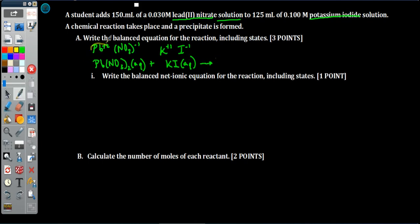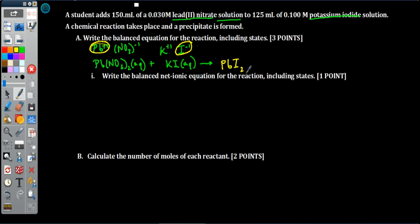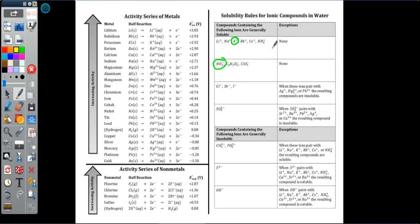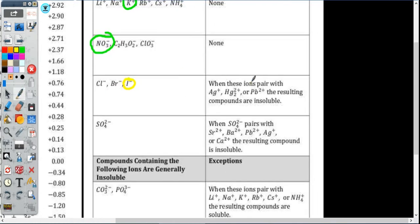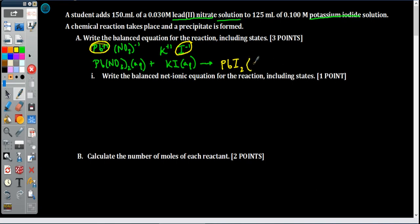This is a precipitation reaction, which is an example of a double replacement reaction — the ions are going to switch partners. The positive lead(II) ion hooks up with the negative iodide ion. Pb²⁺ and I⁻ come together in a one-to-two ratio and form PbI₂. Checking the solubility rules: iodide is generally soluble, but lead(II) iodide is an exception — it's insoluble. So PbI₂ is our precipitate, our solid.